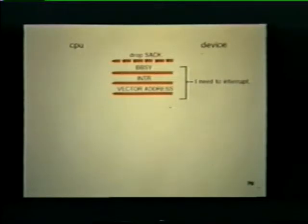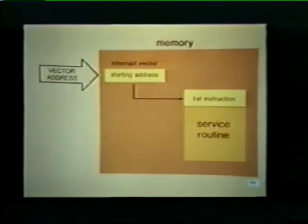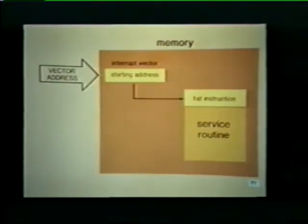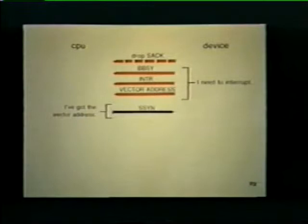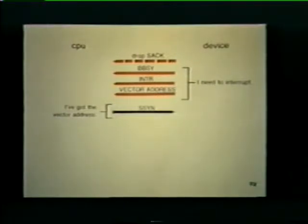Note also that the tape unit sends the address of an interrupt vector to the CPU. The vector address functions as a pointer. It directs the CPU to a specific location in memory where an interrupt vector is stored. This interrupt vector contains the starting address of a service routine that will analyze the tape unit's error condition. Before the CPU executes this service routine, it acknowledges the interrupt by sending a slave sync, or SSYN, signal to the device. This informs the tape unit that the CPU has received the address of its interrupt vector.